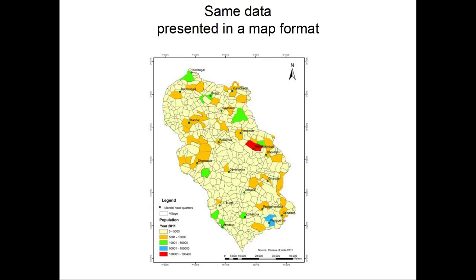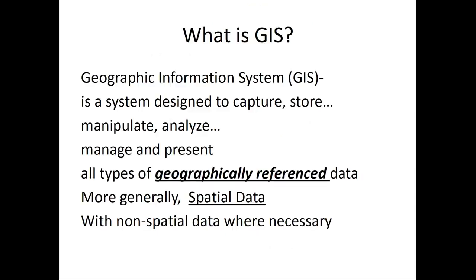For example, you can see here in this map that there is actually a city in the middle of a large number of villages. Now, if you believe the map way is a better way of presenting population data, you have already got an idea of what GIS is.